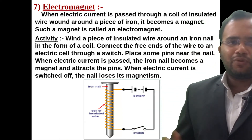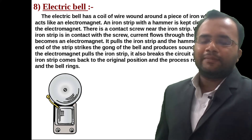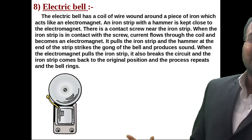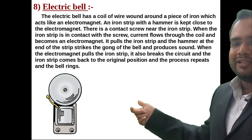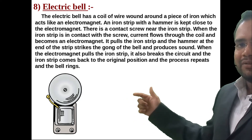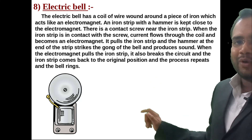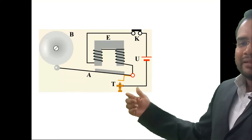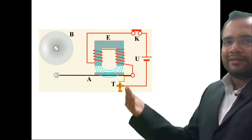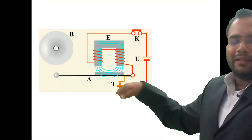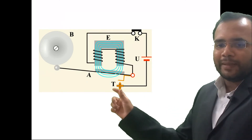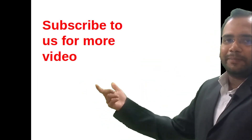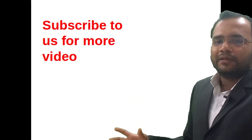Next is the electric bell, which is a common household appliance. The figure shows there is an electromagnet with a coil. When the supply is switched on, current flows through the electromagnet. The iron striker gets attracted by the electromagnet and continuously strikes the bell, causing the bell to ring. This is the basic concept of the electric bell.